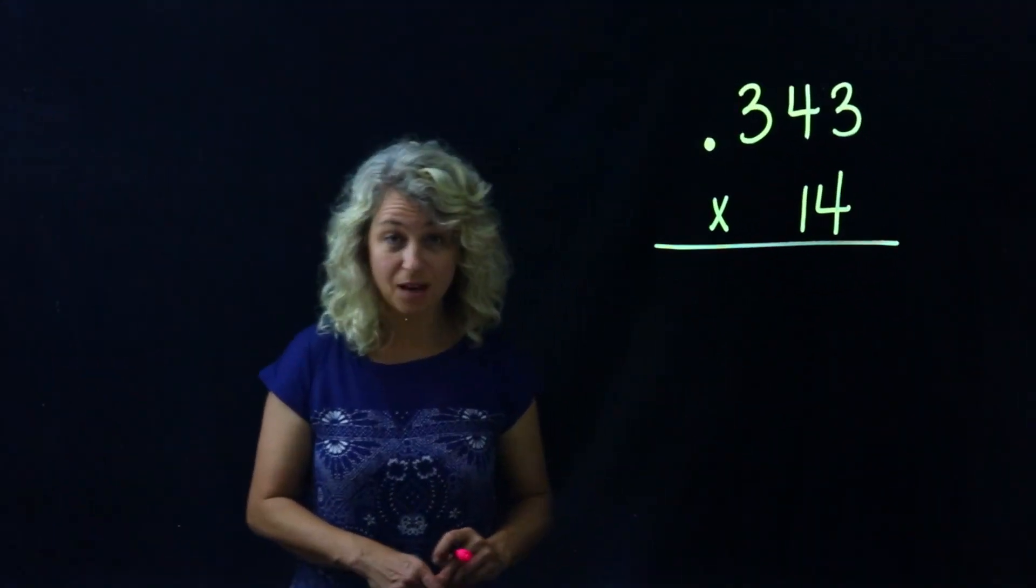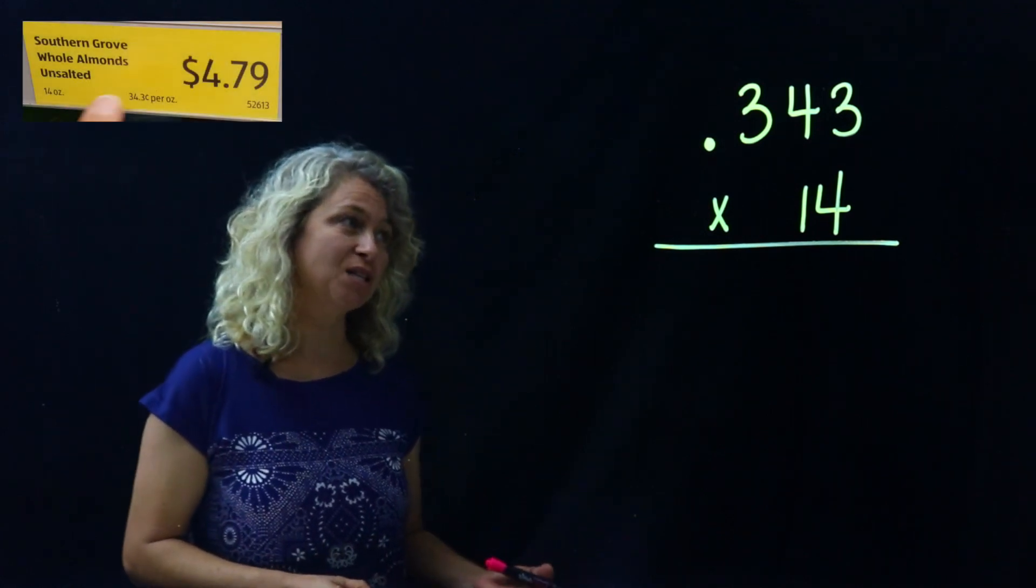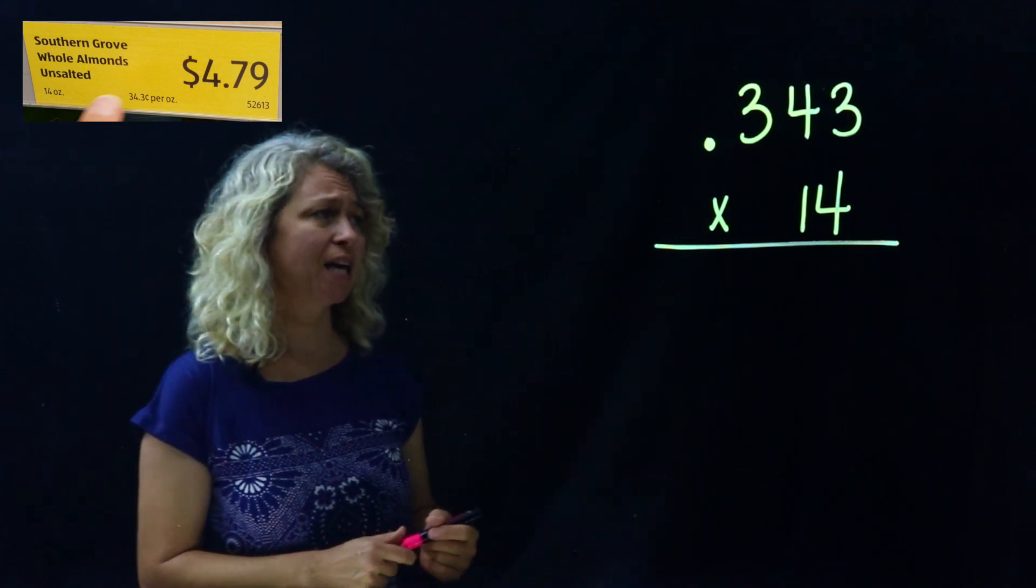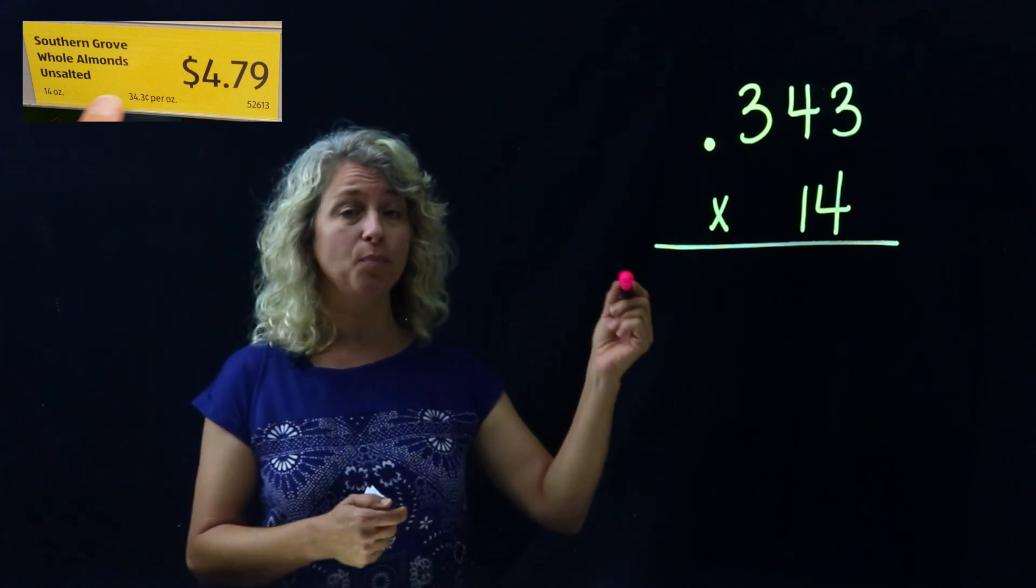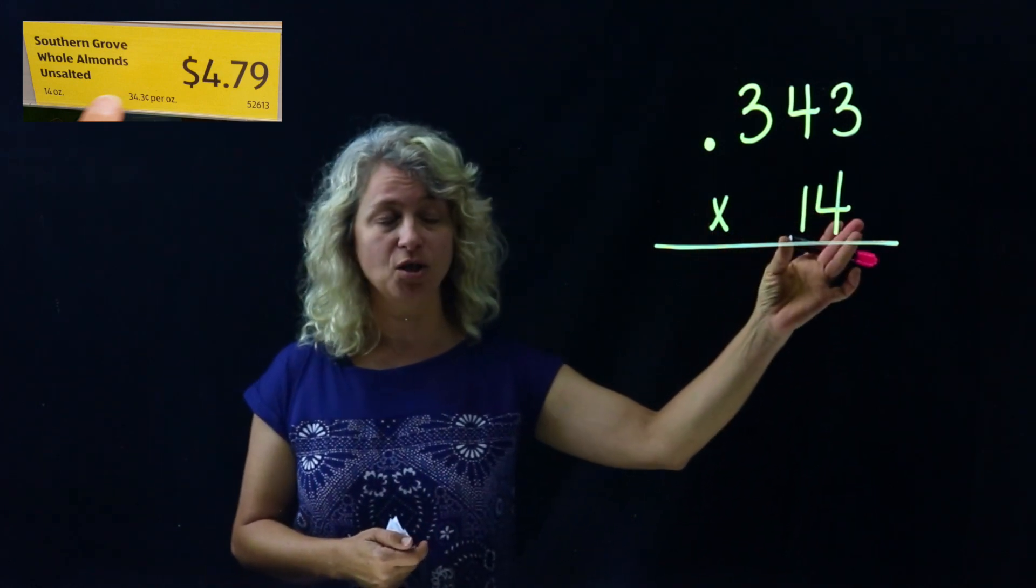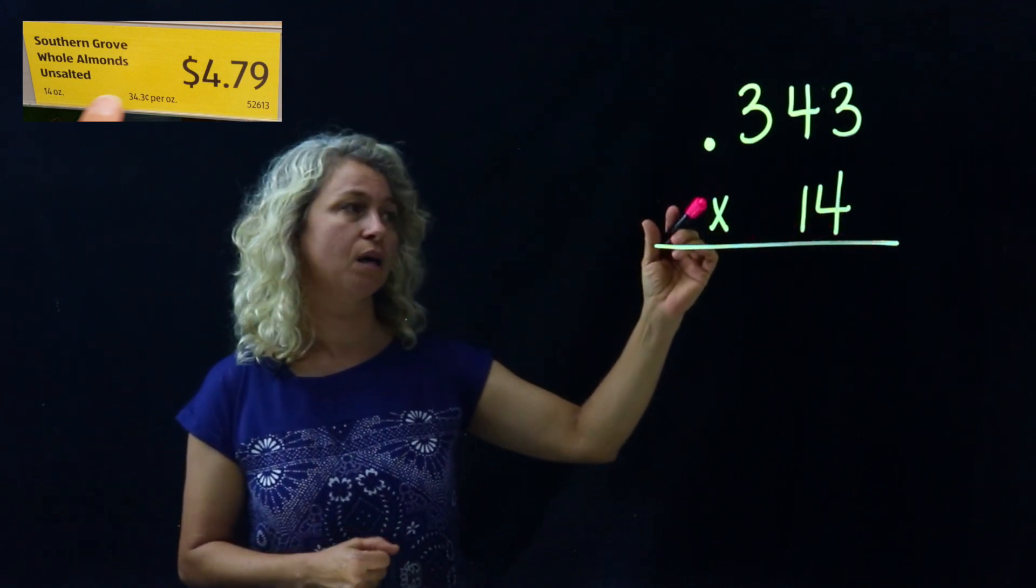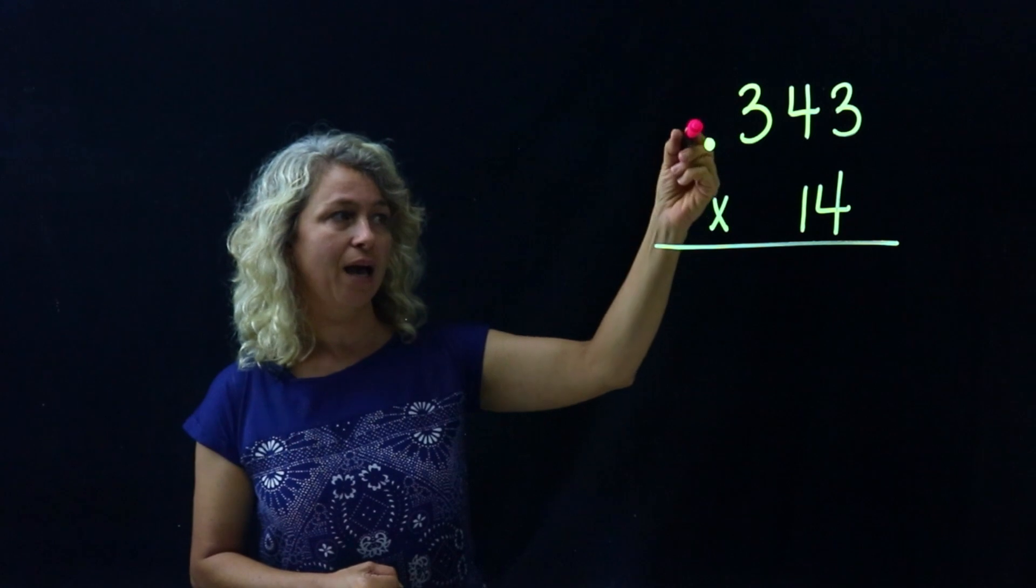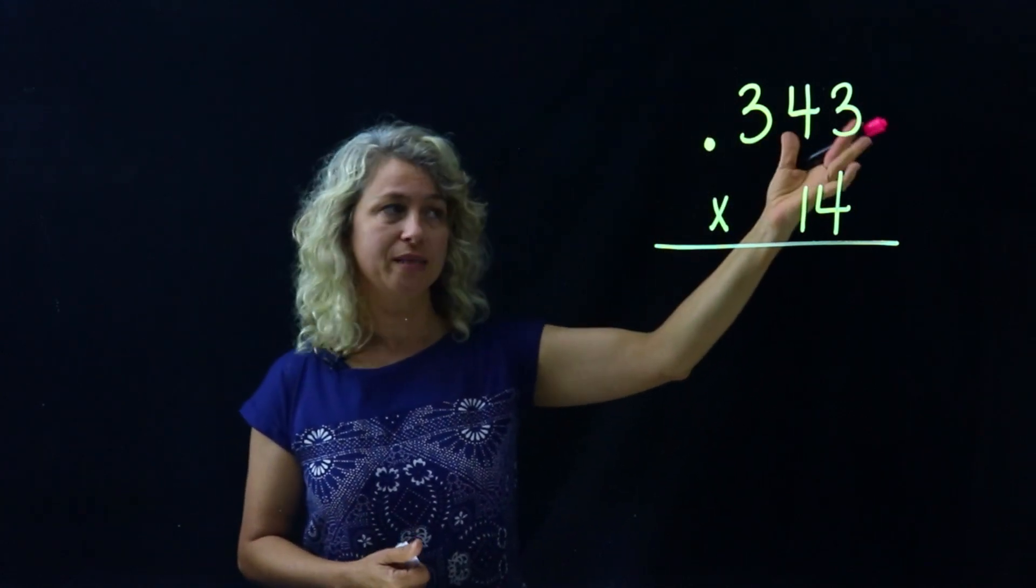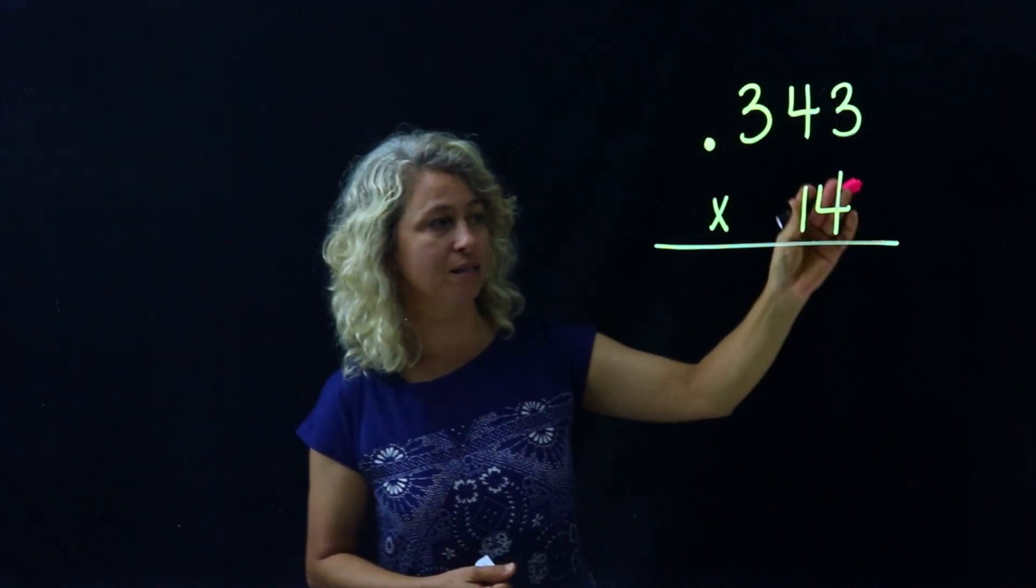All right, so after eating Mexican food we went to the grocery and we found some almonds we wanted to buy. We saw the sign that said 34.3 cents per ounce, and in each bag it was 14 ounces. Now, since this is money that we're talking about, we would write it as 0.343 - we say it three hundred forty-three thousandths - and we're going to multiply this times the whole number 14 because of 14 ounces.